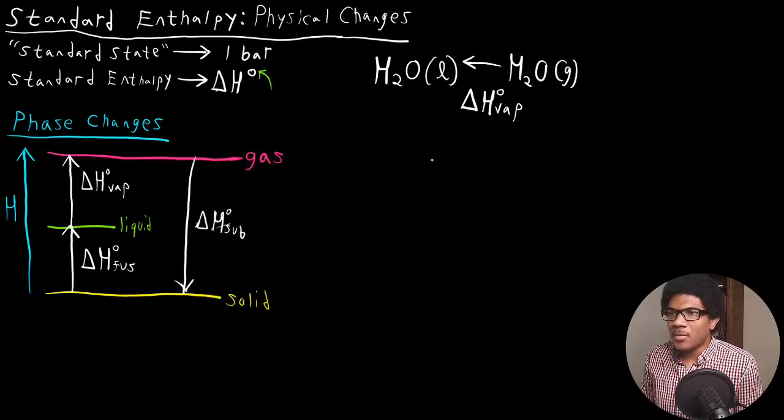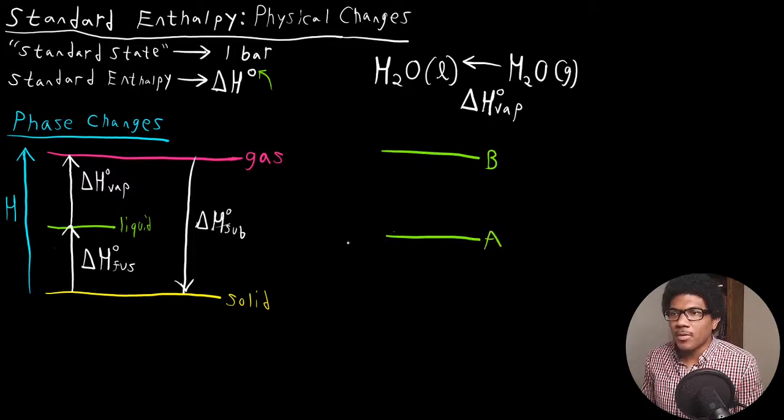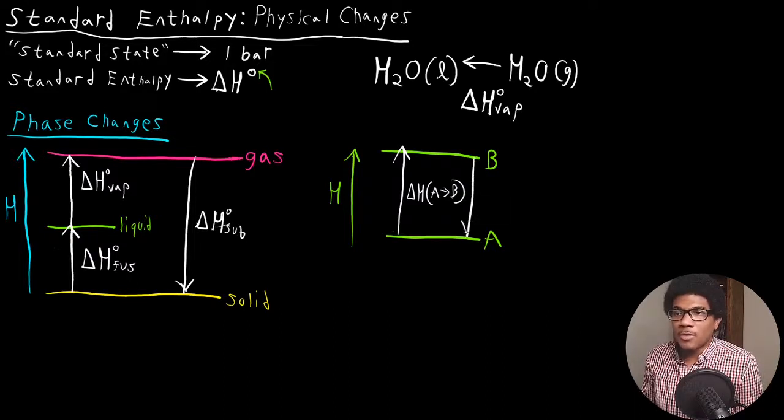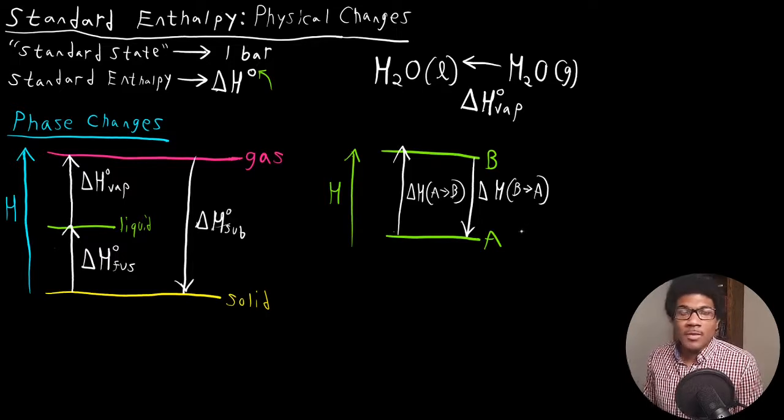Let's say we have some state B up here, some state A down here. Let's say that B is greater than A on an enthalpy scale. We can have a transition from A to B, so there'll be some enthalpy change associated with going from A to B. Obviously, this is reversible, and we can go back from B to A. You can think about this just like you would phase changes. You can vaporize water, and then it can condensate again as well, go back to being a liquid. If we have these two processes...